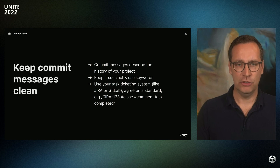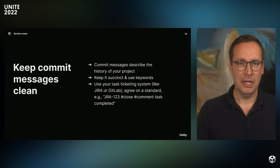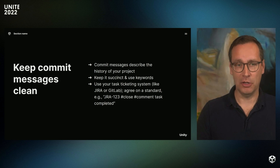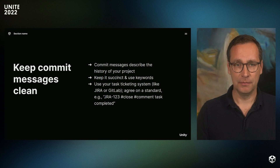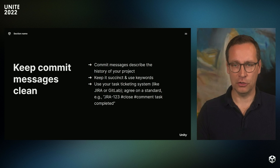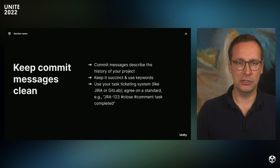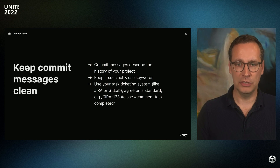You also want to make sure your commit messages are as meaningful as possible. It should be easy for your teammates to understand what the commit is about, and it should also be easy for you to remember a year from now. Using keywords or thinking about how you might search for the commit later on can be a really useful trick for creating good descriptions. If you're using a system like Jira, you can also include the ticket number or agree on a standard that works for the team, like in the example here on the slide.